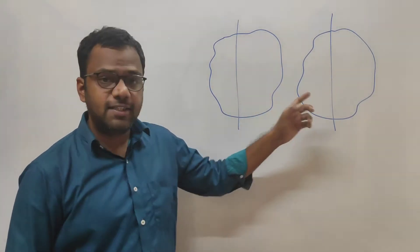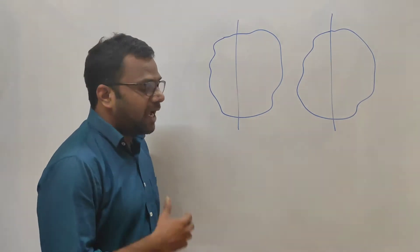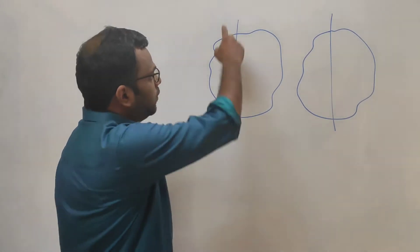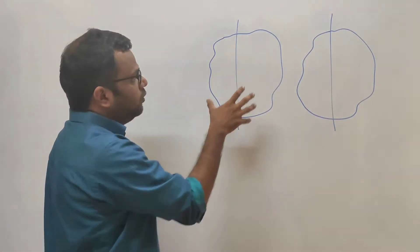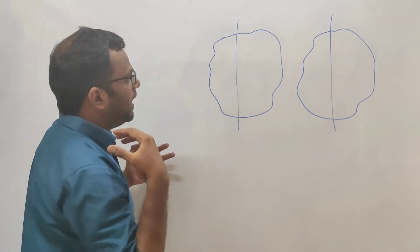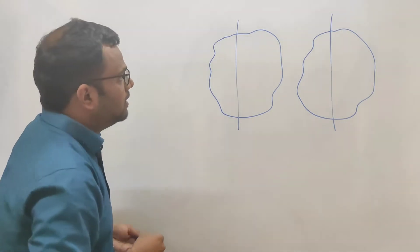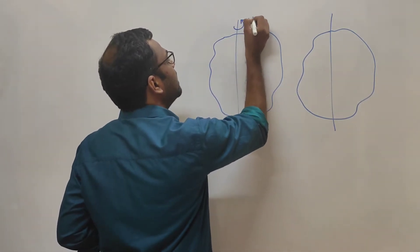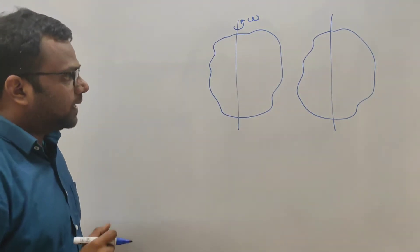Let us say we have two bodies which are initially at rest, but I want to make them rotate with some angular velocity about this axis of rotation. So first I will look at this body and I will apply some efforts to this body, spending some energy on it, such that now it has started to rotate with some angular velocity omega.